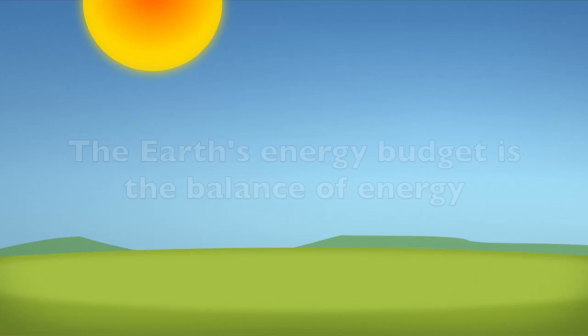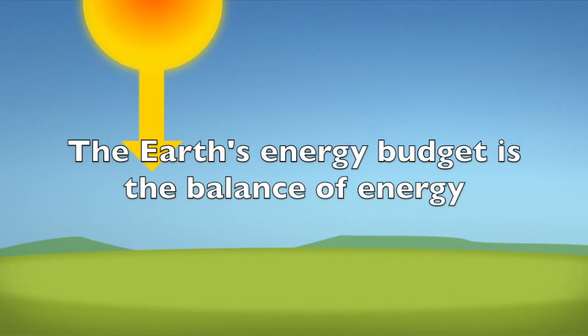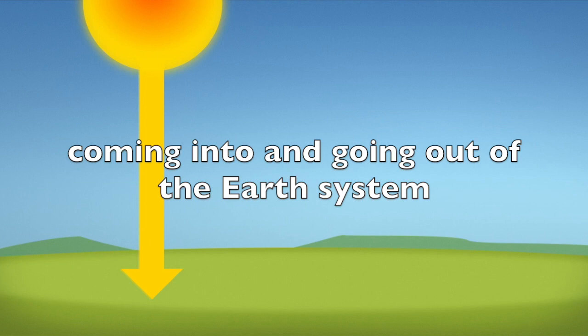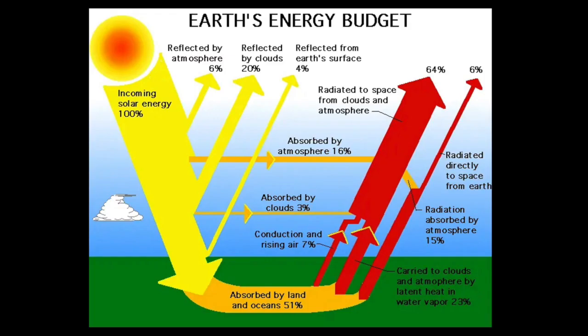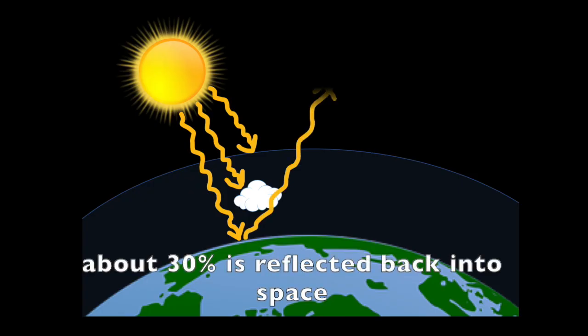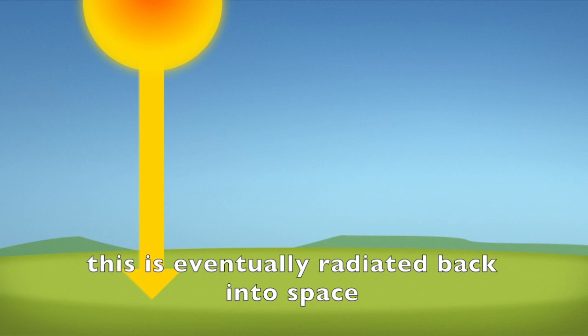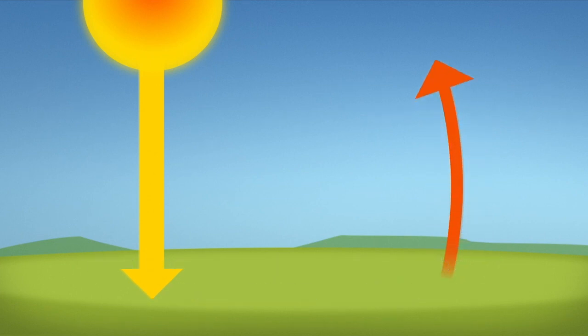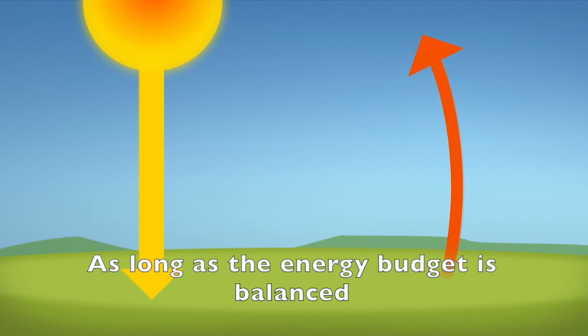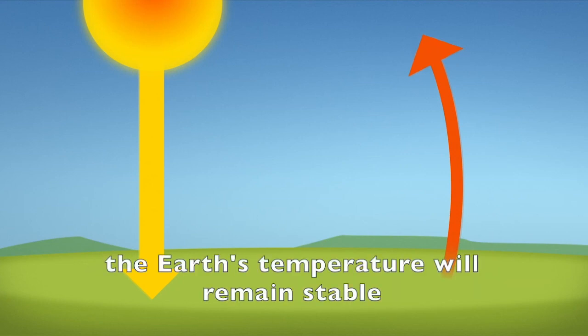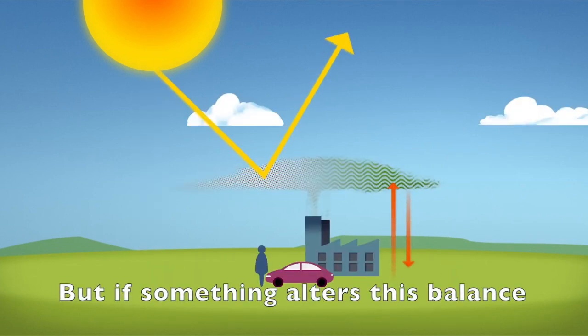In summary, the Earth's energy budget is the balance of energy coming into and going out of the Earth's system. Of the energy that comes from the Sun, about 30% is reflected back into space. Of the remaining 70% that is absorbed by the atmosphere, clouds, land, and ocean, this is eventually radiated back into space as infrared radiation. As long as the energy budget is balanced, the Earth's temperature will remain stable. But if something alters this balance, the Earth could get warmer or cooler.